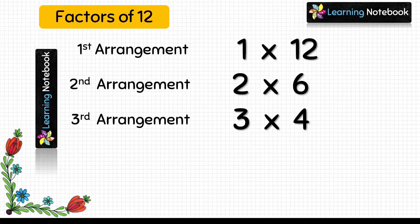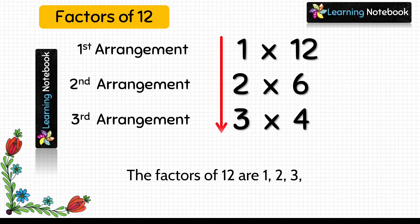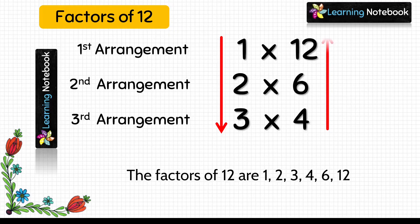Now let's write factors of 12 using these three arrangements. We will start from top to bottom: the factors of 12 are 1, 2, 3. Now we will write from bottom to top: 4, 6, and 12. So this is how we can find factors of 12 with the help of this interesting activity.